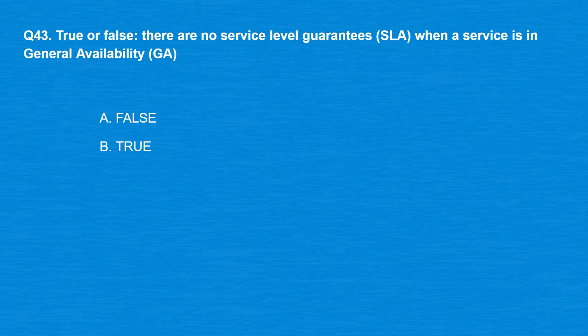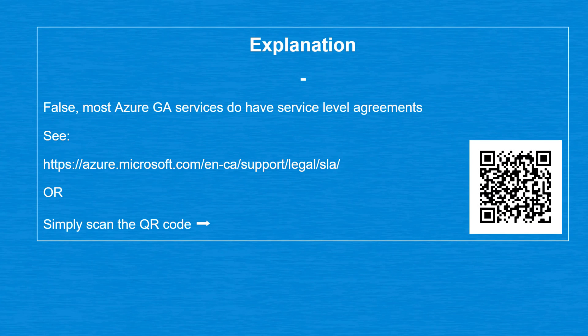Question 43: True or false — there are no service level guarantees (SLA) when a service is in general availability (GA). Option A: False. Option B: True. The correct answer is Option A, False. Most Azure GA services do have service level agreements.